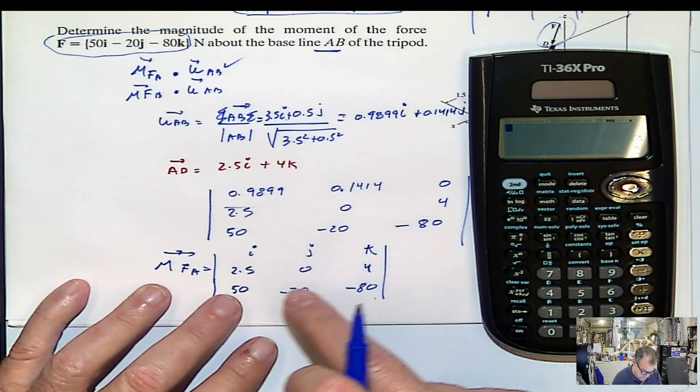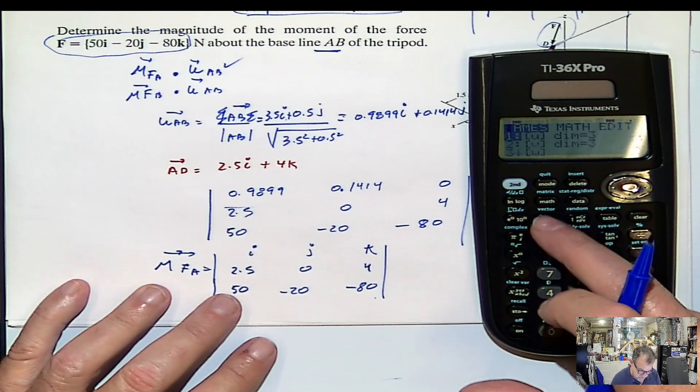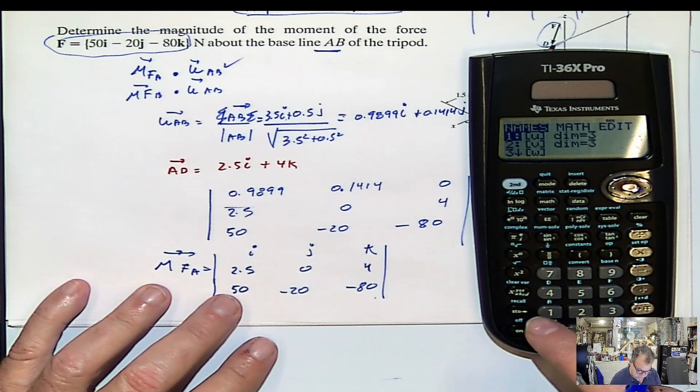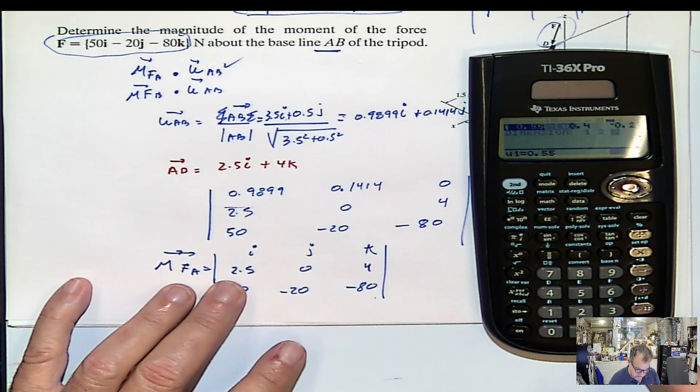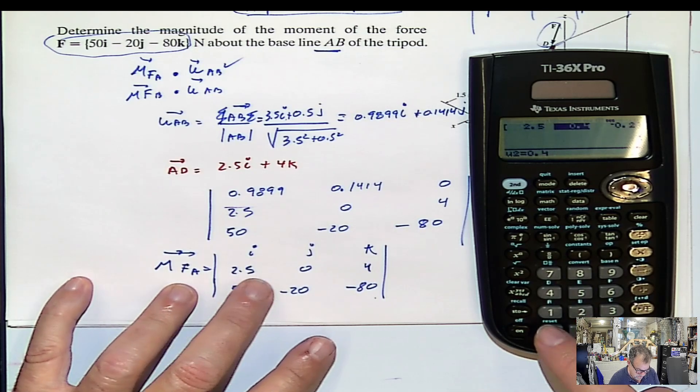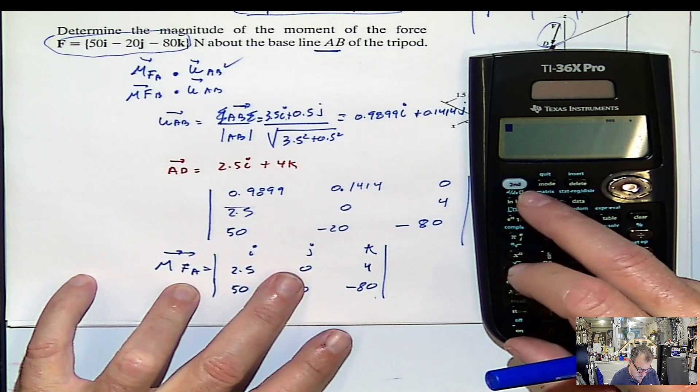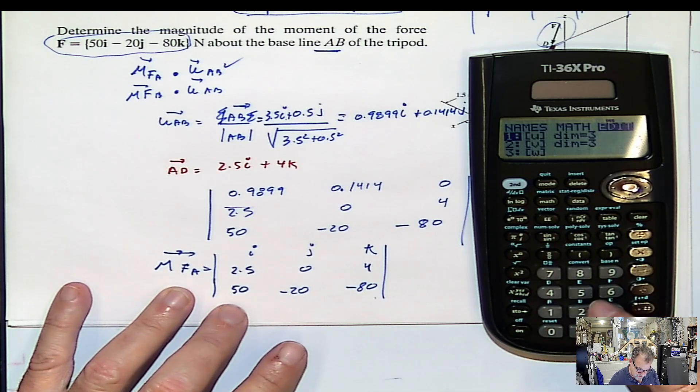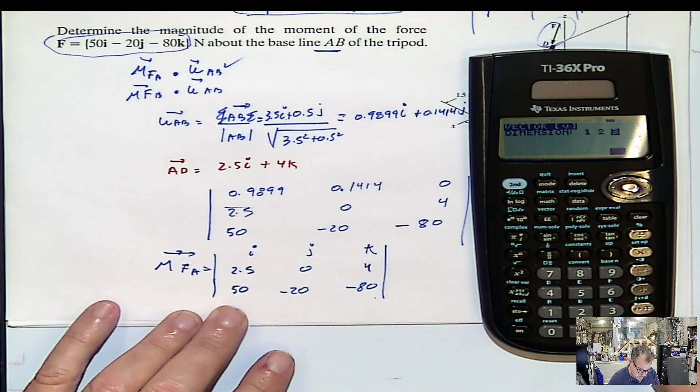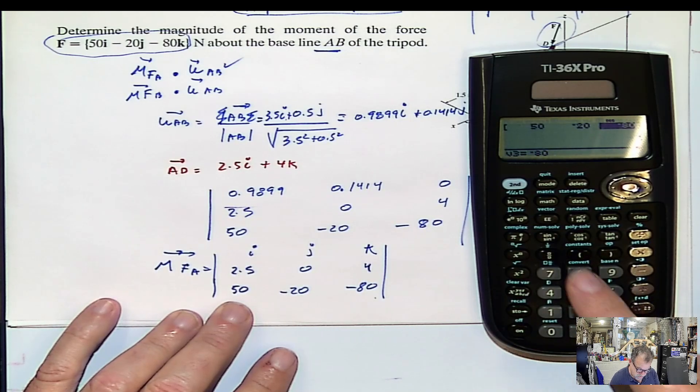So if I can find this moment first by steps, by stages, vector, let's edit the first vector again. The magnitude, the first value is 2.5, the second is 0, the third is 4. Good, now let's do the other vector. Vector 2 is the force. Edit the second one. Three dimensions, yes, 50, negative 20, negative 80. Done. Good.